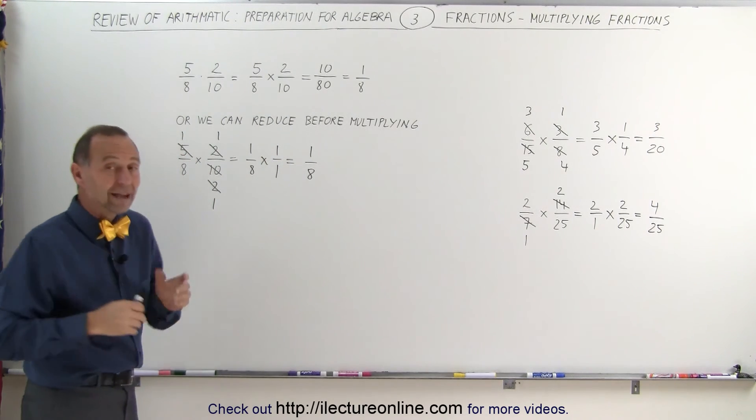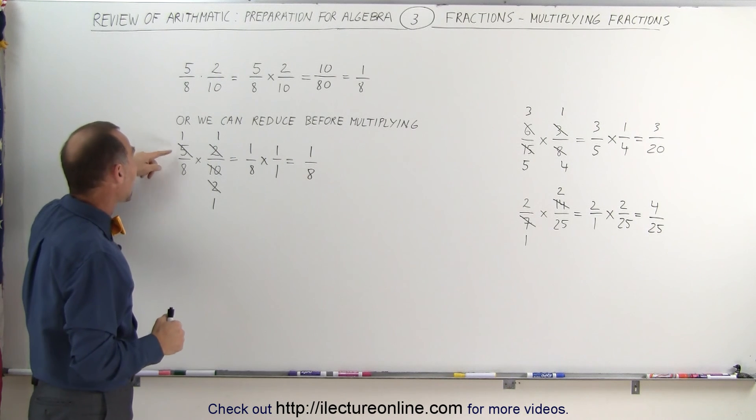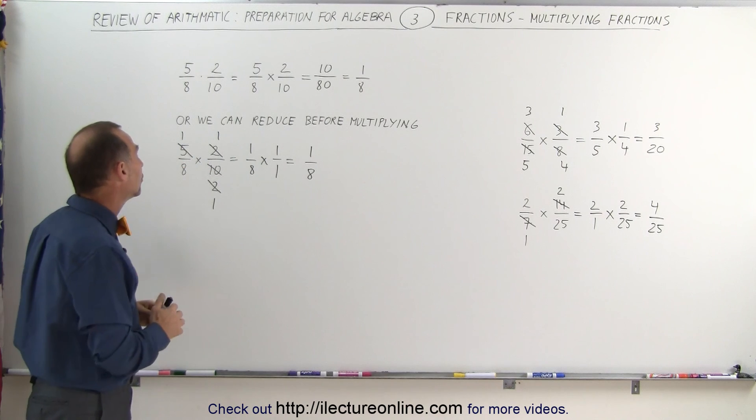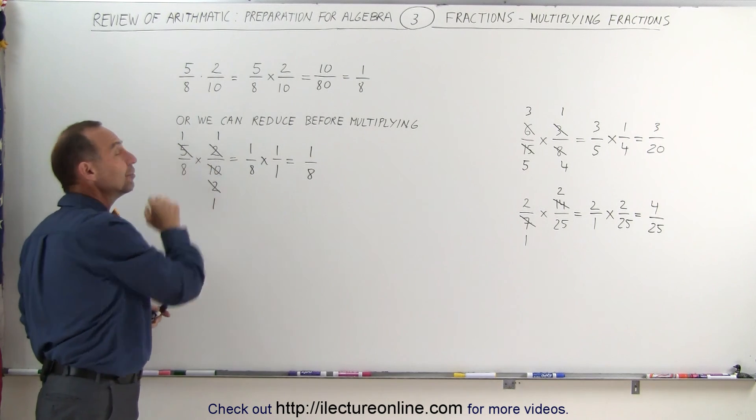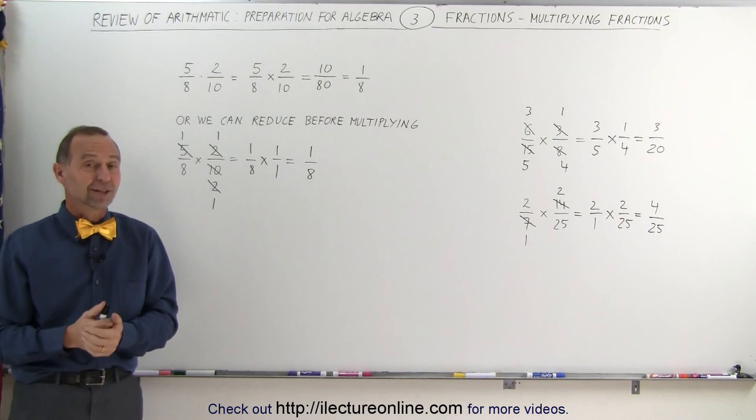Again, you don't have to reduce if you don't want to, but it's probably preferred. And you look for common factors. So here you can see that you can reduce the 5 and the 10, even though it's the numerator of one fraction and the denominator of the other. And that's how it's done.